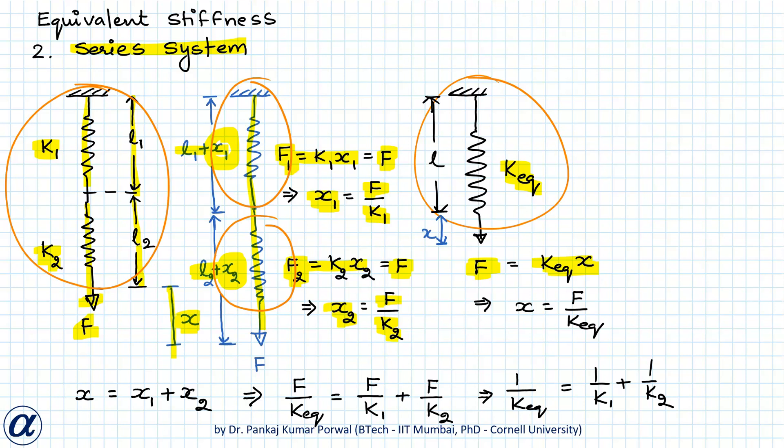Now if I look at my original system and the equivalent system, the X will be equal to x1 plus x2, that is stretching of individual springs added together. And if I substitute values of x, x1 and x2 in this equation then I get x is F upon k equivalent, x1 is F upon k1, x2 is F upon k2, and here this F will cancel on both sides.